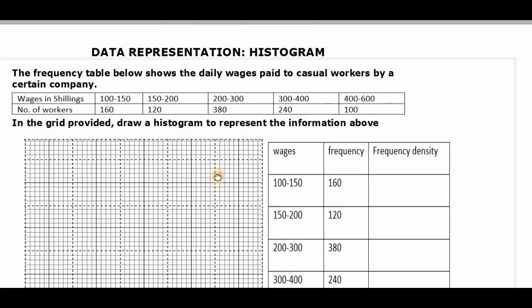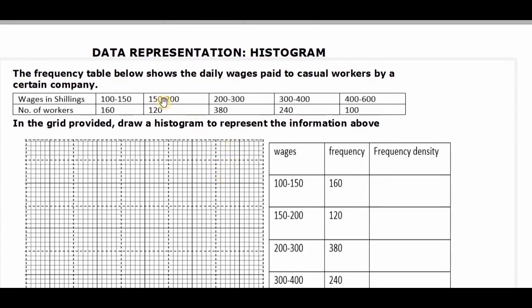Before we draw the histogram, we need to take note of the following. When the class intervals are uniform, we'll be plotting frequency against the upper class boundaries. But if the class interval is non-uniform, then we'll be plotting frequency density against the upper class boundaries.